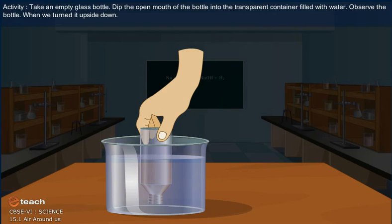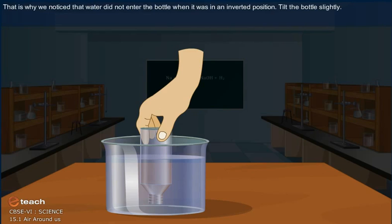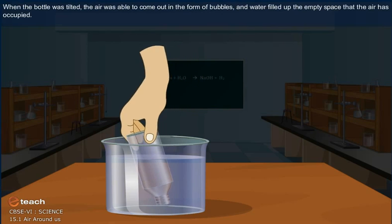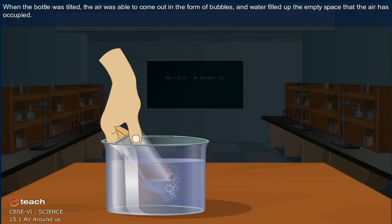Observe the bottle. When we turned it upside down, that is why we noticed that water did not enter the bottle when it was in an inverted position. Tilt the bottle slightly. When the bottle was tilted, the air was able to come out in the form of bubbles.